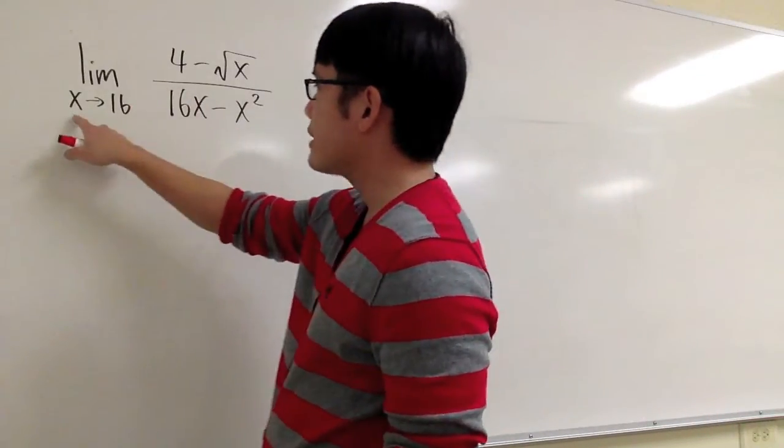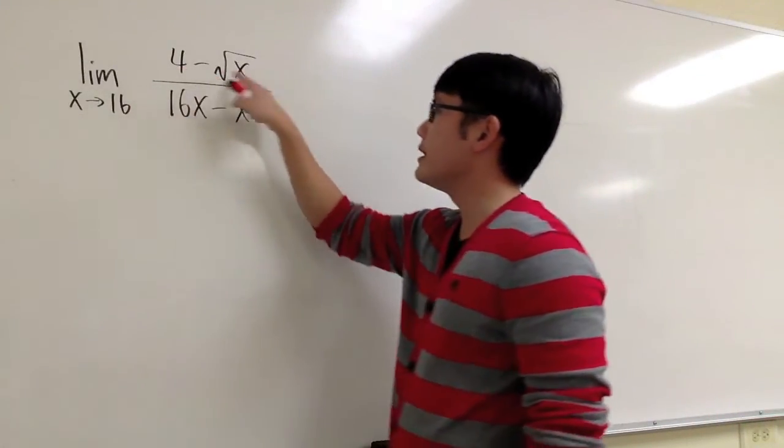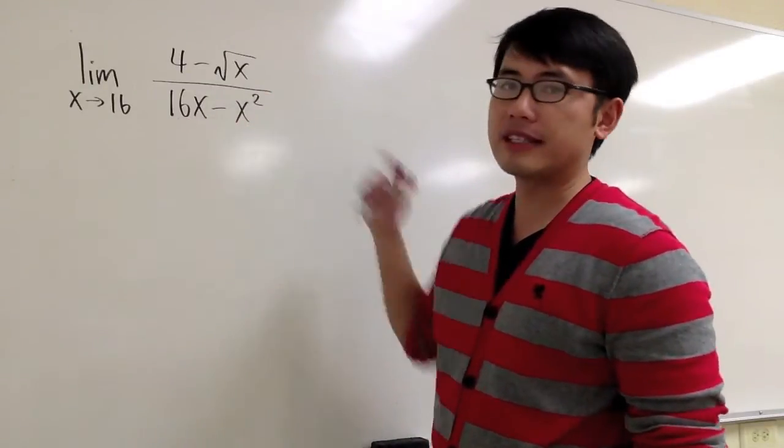Let's look at this limit, the limit when x is approaching 16: 4 minus square root of x over 16x minus x squared.